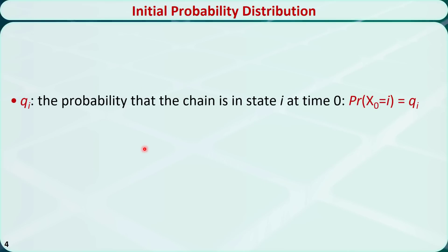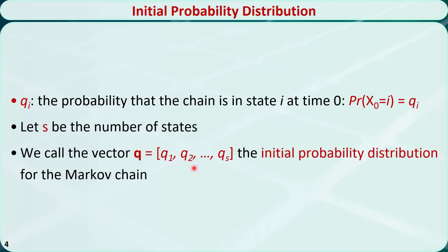The initial state of the Markov chain can be described as an initial probability distribution. Let q_i be the probability that the chain is in state i at time 0. If we have a total of s different states, then the vector q = (q_1, q_2, ..., q_s) is called the initial probability distribution of the Markov chain. The sum of q_1 through q_s equals 1, or 100%.